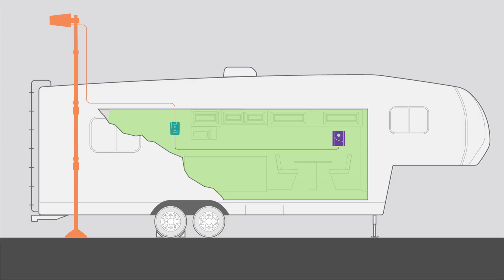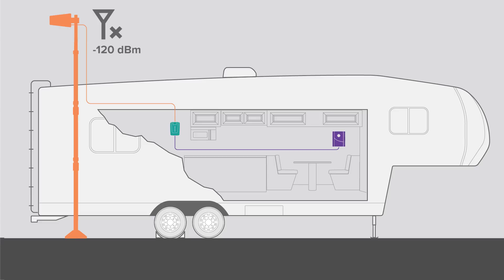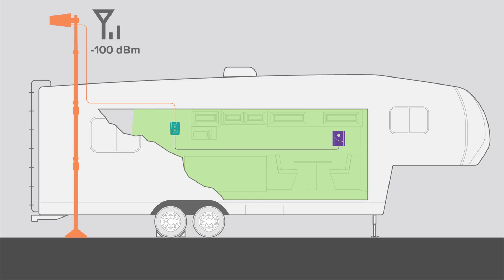The coverage area inside of your RV will depend directly on the strength of the available cell signal outside your RV. A cell phone booster can't make usable cell signal out of no signal. However, even with a very weak signal outside of the RV, we can make it usable, although you may need to be closer to the inside antenna to stay connected.